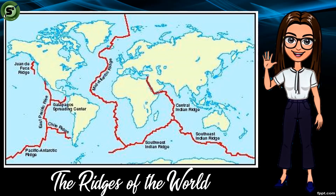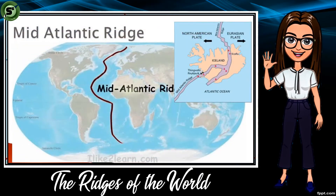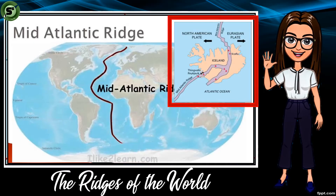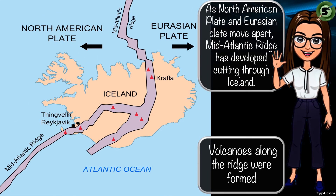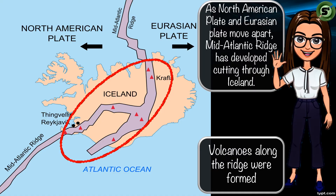Among all ridges, the Mid-Atlantic Ridge is considered one of the most active in terms of volcanic activity. It formed due to the diverging boundaries of the North American plate and the Eurasian plate. The Mid-Atlantic Ridge is well known because it cuts Iceland directly, separating the country into pieces. Because of the diverging movement of the North American and Eurasian plates, fissure volcanoes along the splitting parts of Iceland appeared. Iceland is directly cut by the Mid-Atlantic Ridge.